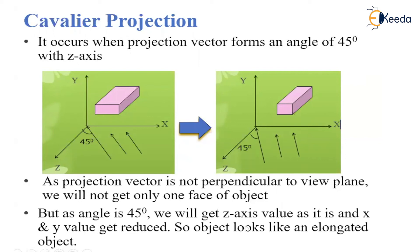As a result, we get the z-axis value as it is, and the x and y values get reduced as shown in the diagram. The object looks like an elongated object in the cavalier projection.